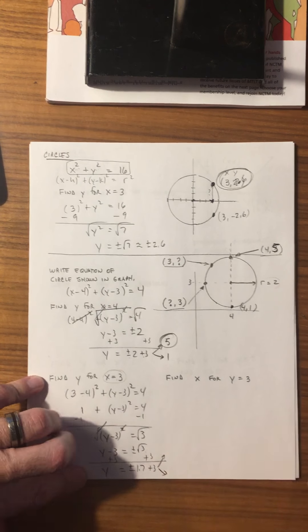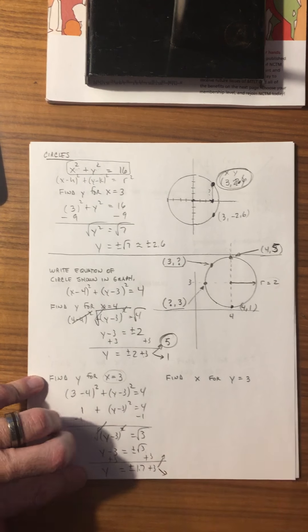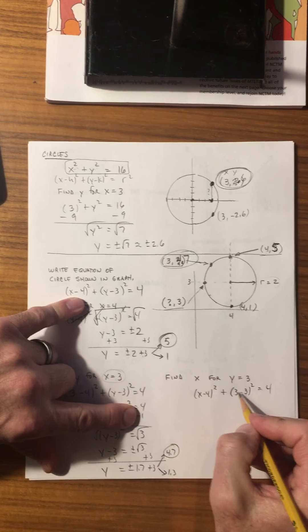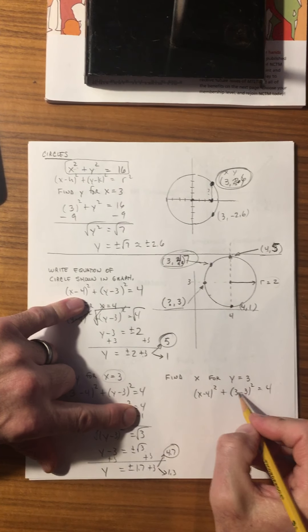Here's the last one: figure out the x value when y equals 3. We go back to the original equation and solve for x by substituting in y equals 3. 3 minus 3 is 0, that cancels. Taking the square root, we get x minus 4 equals plus or minus 2. Adding 4 to both sides: x equals plus or minus 2 plus 4. The two possibilities are 2 plus 4 equals 6, or negative 2 plus 4 equals 2. Our x values are either 6 or 2.